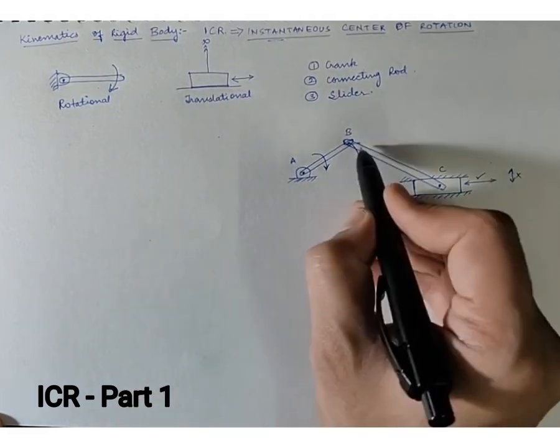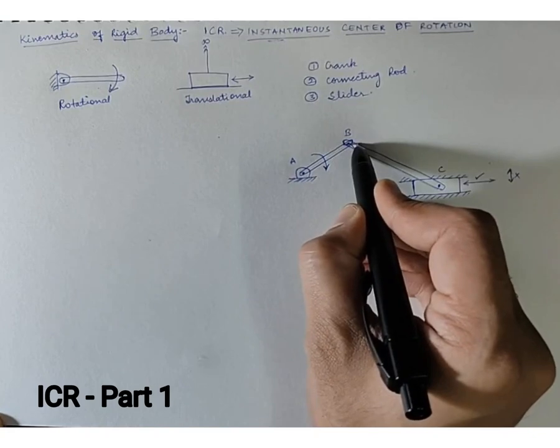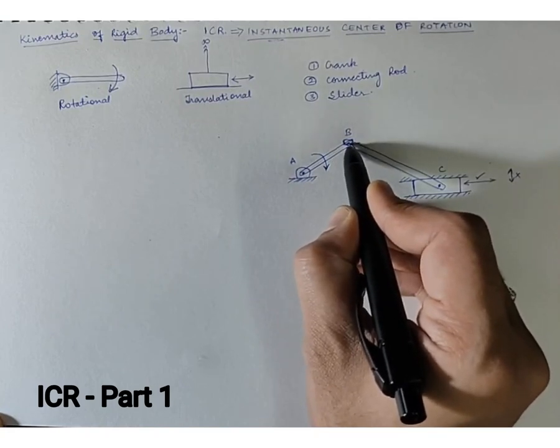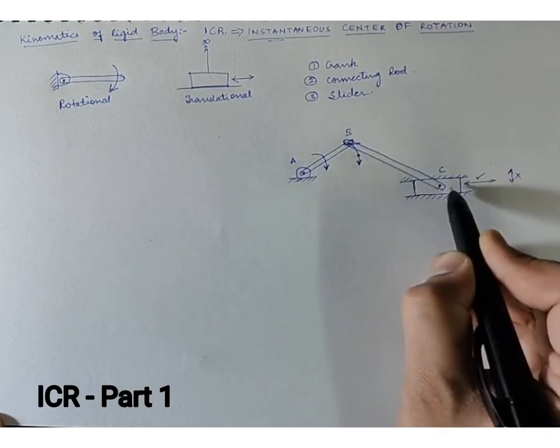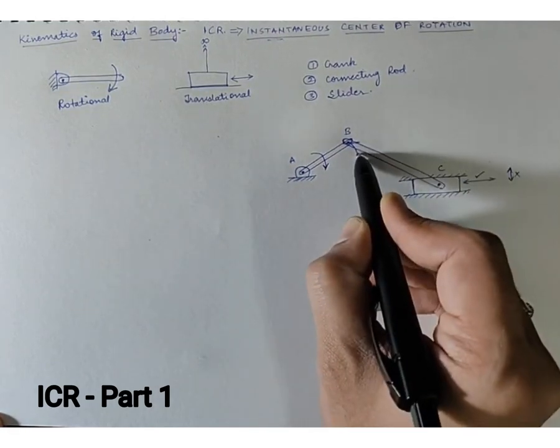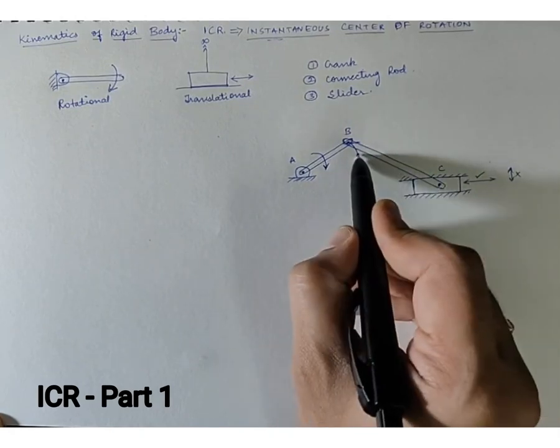Now whatever distance it has covered, the same amount of distance it will be pushing the entire link from this point to the next point C. So because the link is again rigid, what will happen?